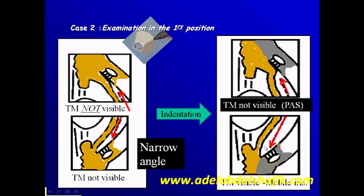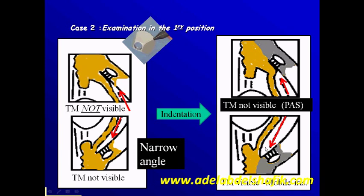In the lower part, when we do the indentation, notice the most peripheral part of the iris — it was pushed behind; the iris is movable. In this case the iris is pushed forward, and with the indentation the iris was pushed backward. This is an important sign in cases of plateau iris. If there is a plateau iris, the ciliary processes are behind and you cannot do that. But if it's just a pupillary block glaucoma, then you can push the iris back.